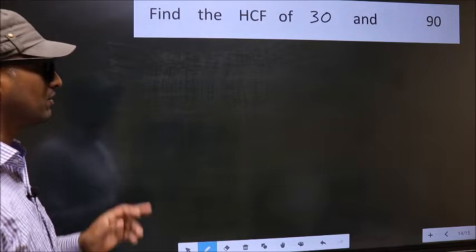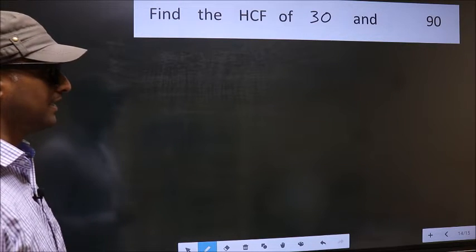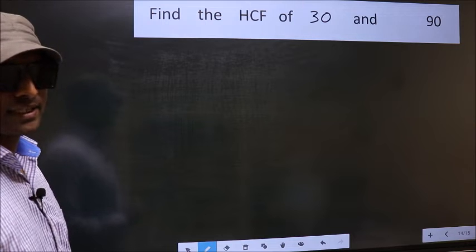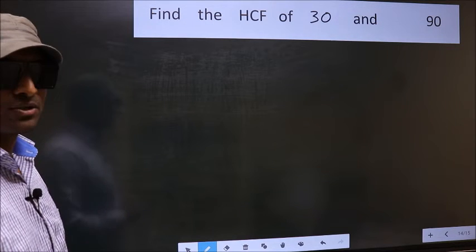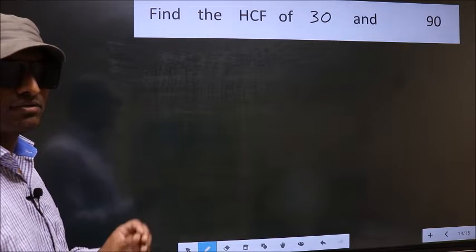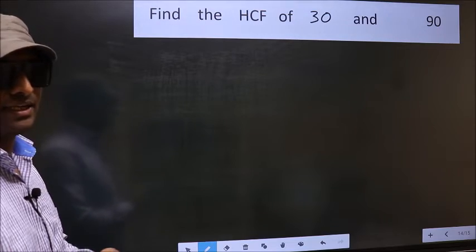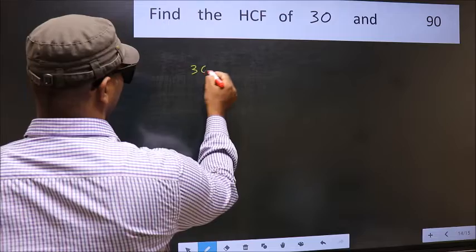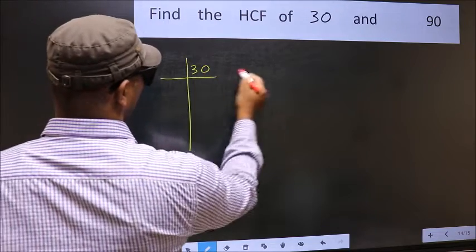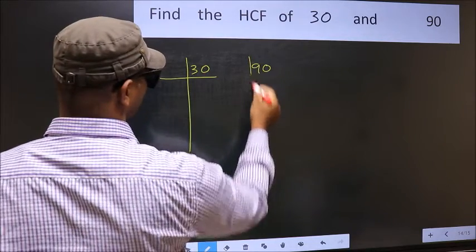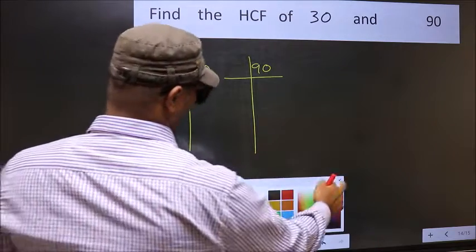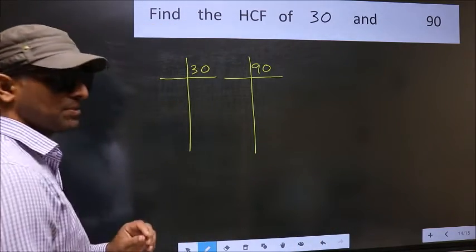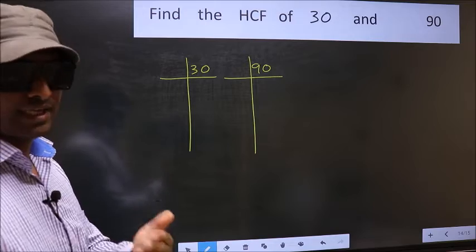Find the HCF of 30 and 90. To find the HCF, we should do the prime factorization of each number separately. What I mean is 30 and 90. This is your step 1. Next.